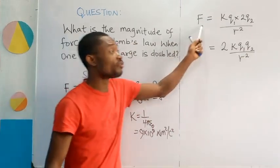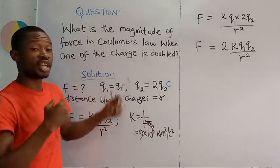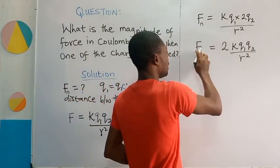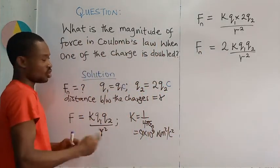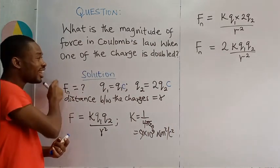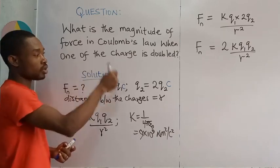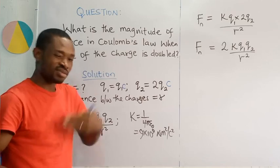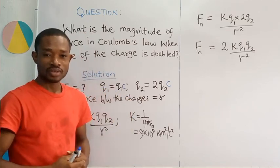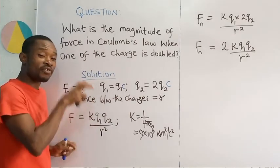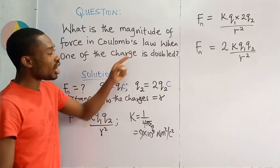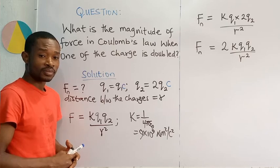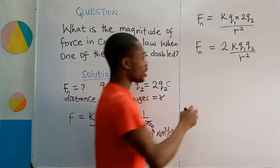Please take note that this is the new force we are trying to calculate under the condition that one of the charges is doubled. Now, I am going to do this. Let us use Fn. I will advise that while someone is solving this, they could indicate what Fn is. Let the magnitude of the force in Coulomb's law when one of the charge is doubled equal Fn, where that Fn should represent the new force. Reason being that this force you are seeing here is that force according to Coulomb's law straight. But by the time one of the charges is doubled, this will no longer be the exact value of the force.